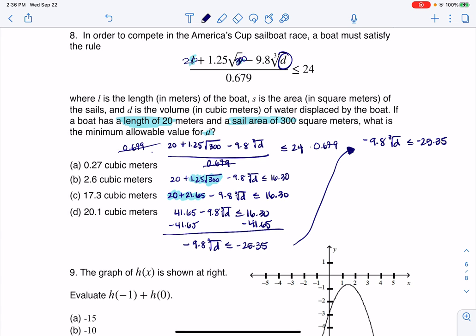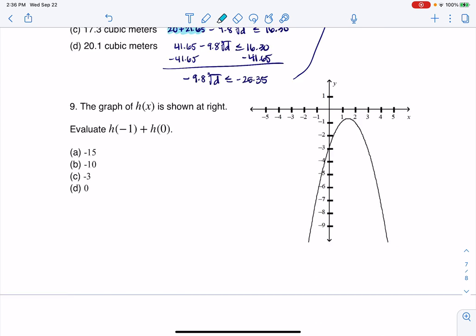All right, I would like to isolate that cubic term, so I'm going to divide by negative 9.8. And keep in mind, when you divide an inequality by a negative number, it changes the direction of the inequality. So I'm going to have here the cube root of D is now greater than or equal to, and this number over here is going to be 2.59. So I do want to mention that.